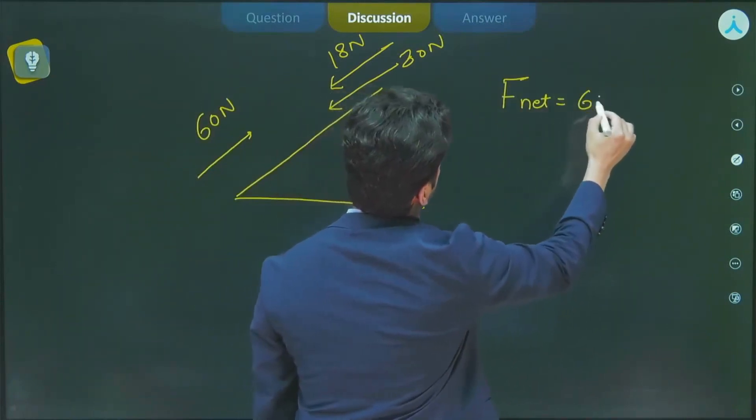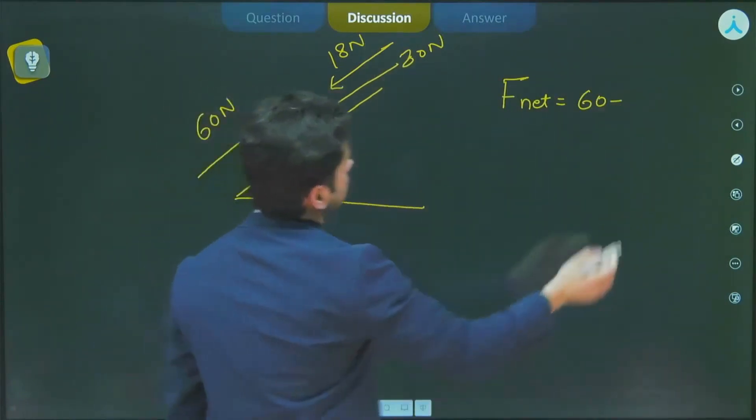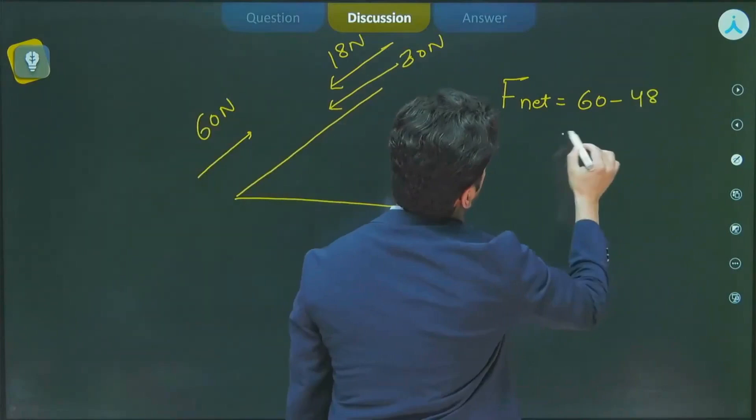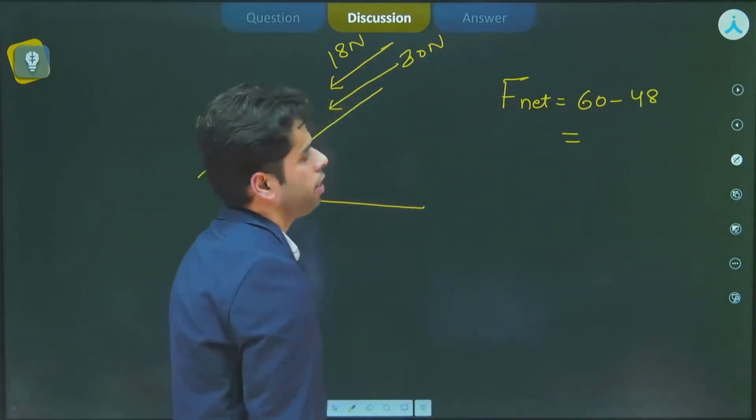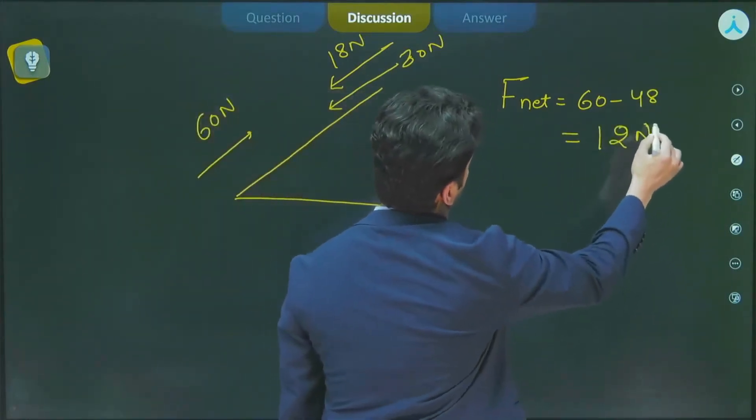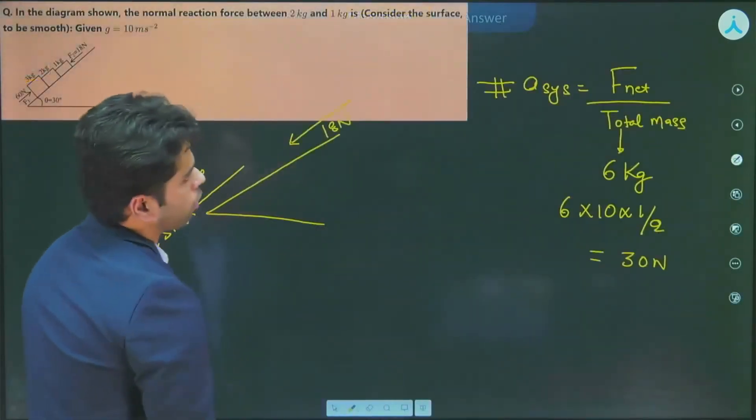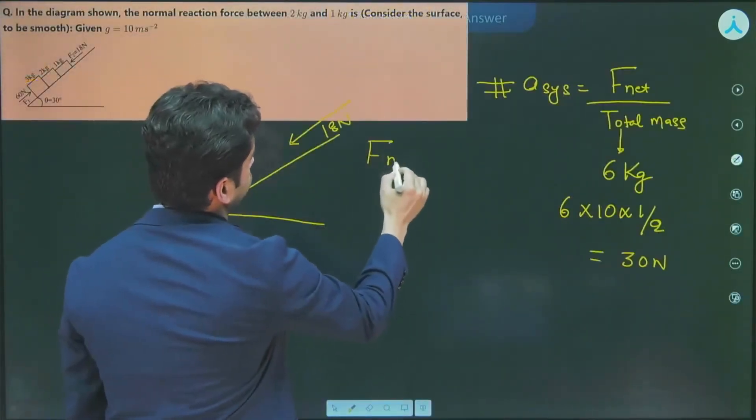F net is equal to 60 minus 30 plus 18, that is 48. So 60 minus 48 is what? 60 minus 40 is 20, 20 minus 8 is 12 N. So net force is 12 N.